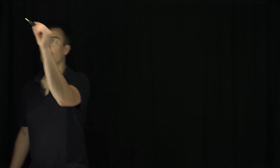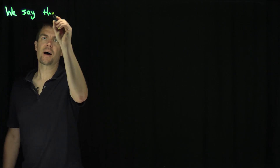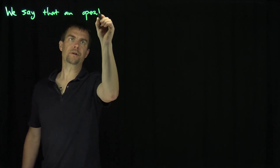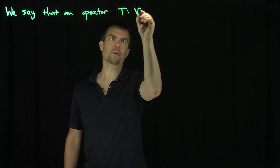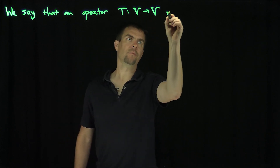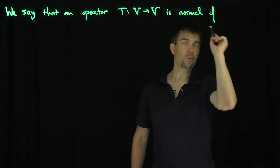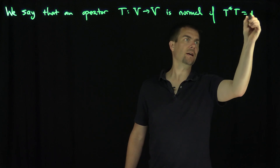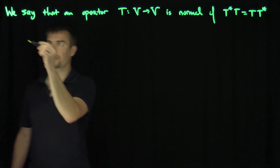Hello, students. In this video, we'll discuss normal operators. We say that a linear operator t mapping v into v is normal if t commutes with its adjoint — that is, if t-star t equals t t-star.